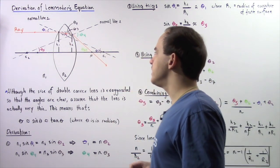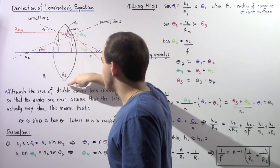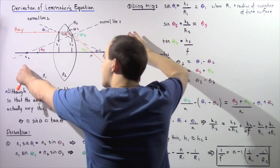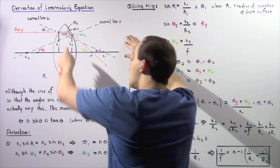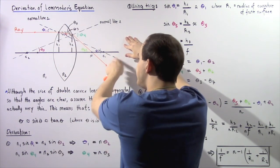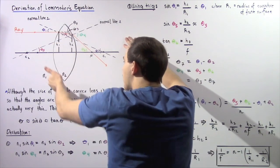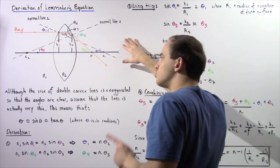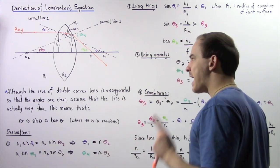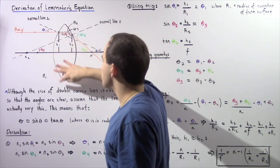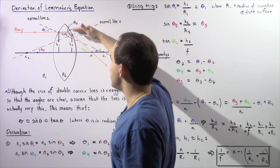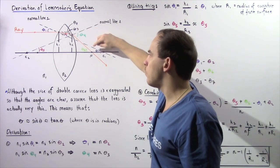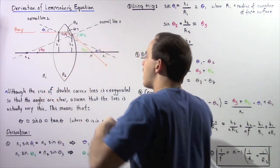Let's suppose we have a double convex lens with a front surface and a back surface. This line is the principal axis. Point C2 is the center of curvature of the back surface and point C1 is the center of curvature of the front surface. Point F is the focal point. A single ray of light parallel to the axis will refract at the front surface, refract again at the back surface, and the final refracted ray will pass through the focal point.